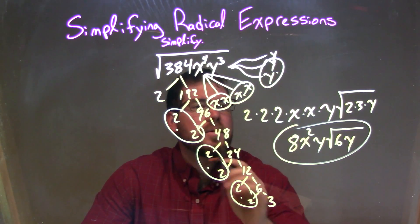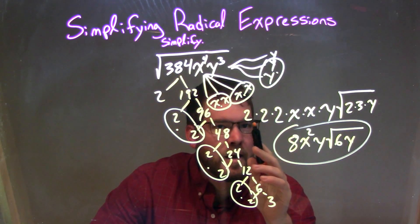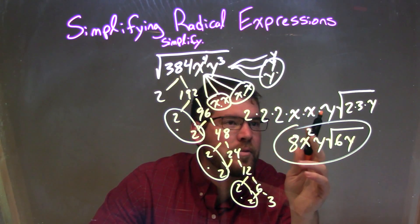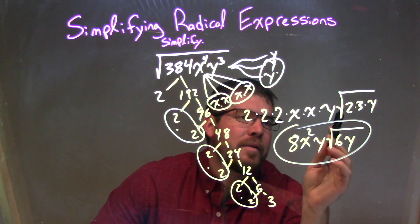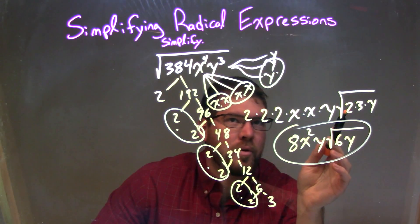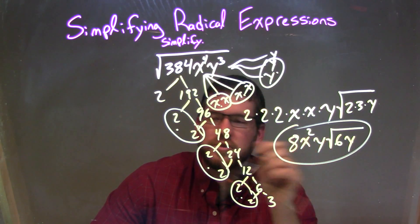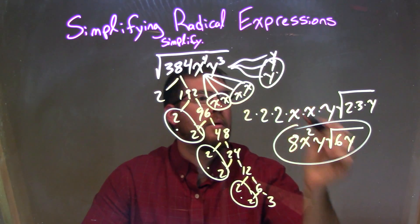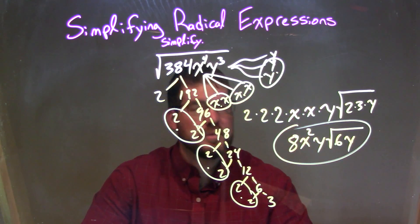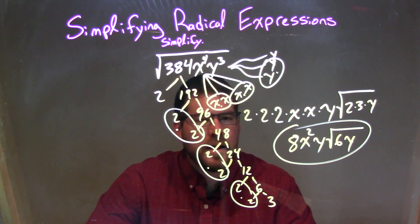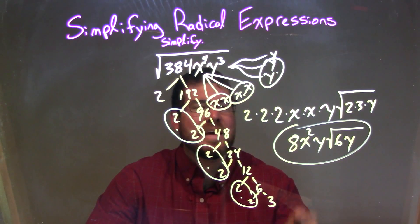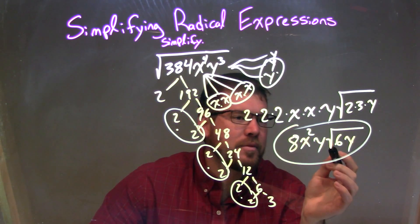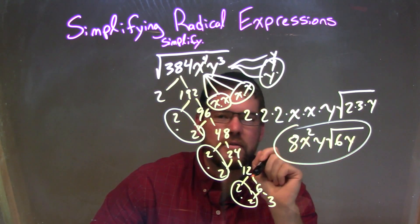From there, I circled my pairs, which are represented outside the root as 2, 2, 2, x, x, and y. Inside the square root, we have all the singles by themselves: 2, 3, and one y. And so we got our final answer to be 8x squared y times the square root of 6y.